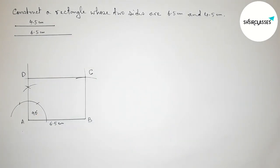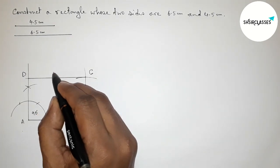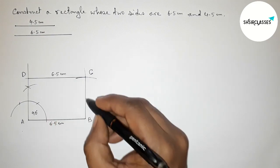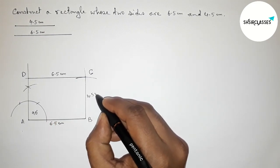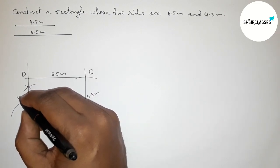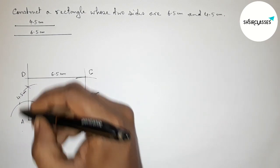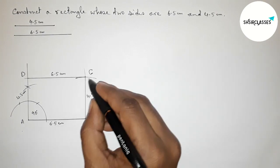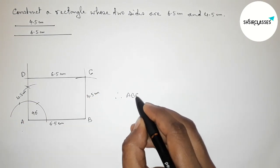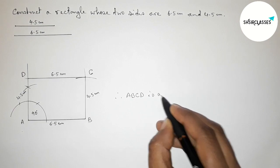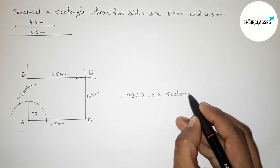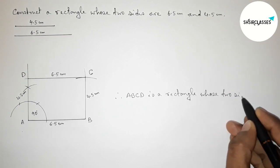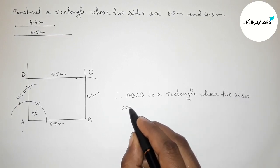Joining line BC, then joining line CD. So AB equals 6.5 centimeters, AD equals 4.5 centimeters, and BC also equals 4.5 centimeters. Therefore, ABCD is a rectangle whose two sides are 6.5 centimeters and 4.5 centimeters.